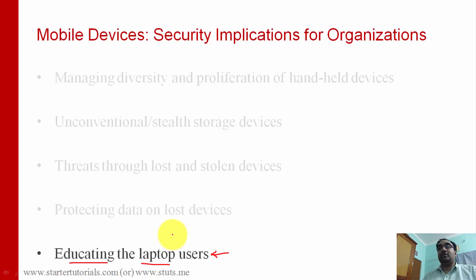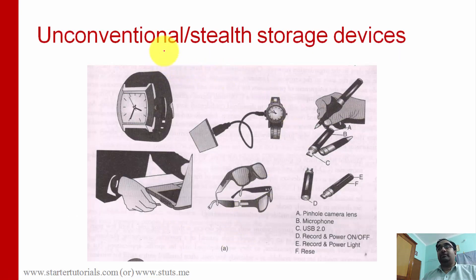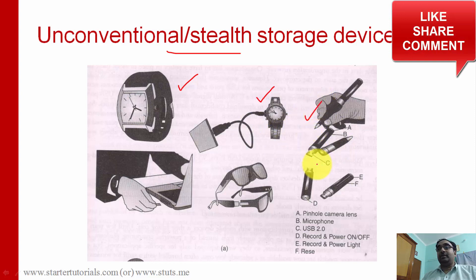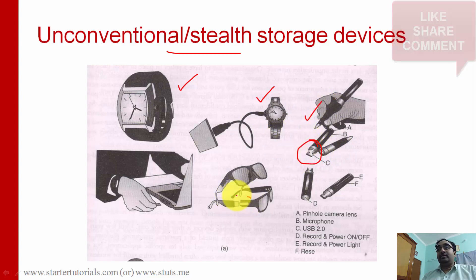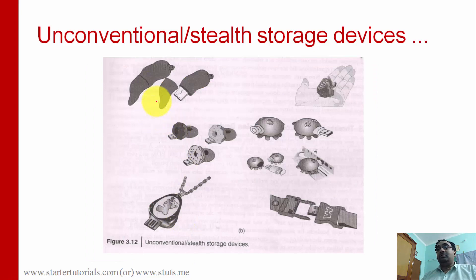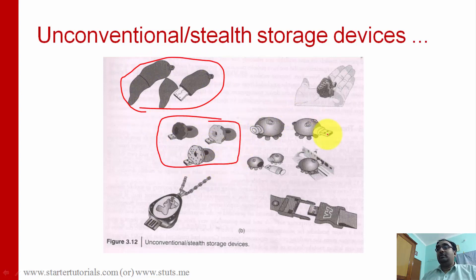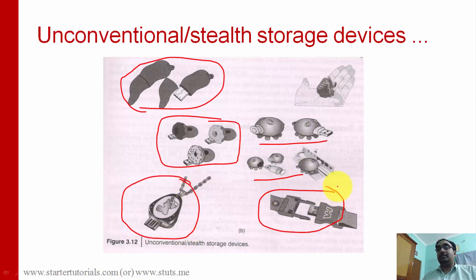Those are the different security implications. Now, here are examples of unconventional stealth storage devices — you can see these kinds of things in James Bond movies. There are pens with a USB embedded in them, goggles with USB, and very tiny storage devices. There are also USBs shaped like a chilli, donuts, play toys, and USBs embedded in keychains and watch straps. These are some of the examples.